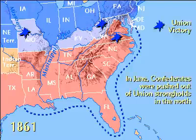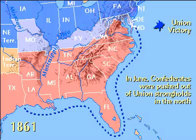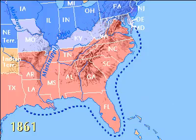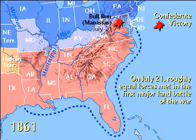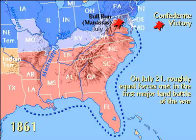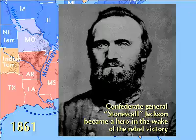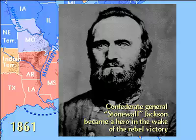In June, Confederates were pushed out of Union strongholds in the North. On July 21st, the two sides met in the first major engagement of the war, the Battle of Bull Run, which ended in a Confederate victory. Confederate General Stonewall Jackson became a hero, and confidence in the South soared.